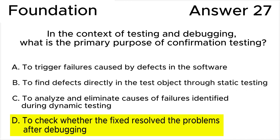Let's see why the rest of the answers are wrong. Answer A is incorrect because triggering failures caused by defects in the software is the primary objective of dynamic testing, not confirmation testing. Key point: trigger failures.